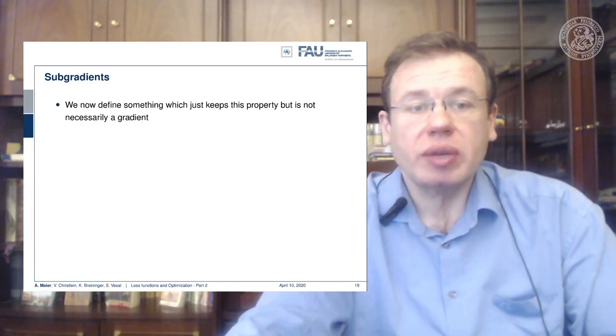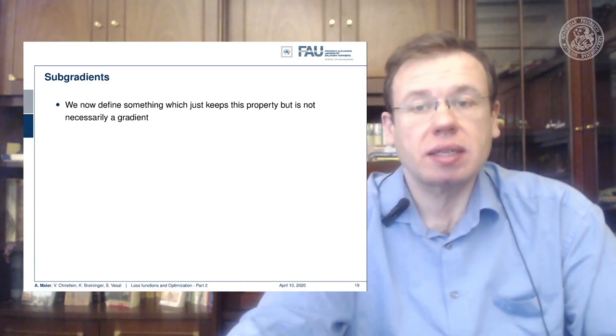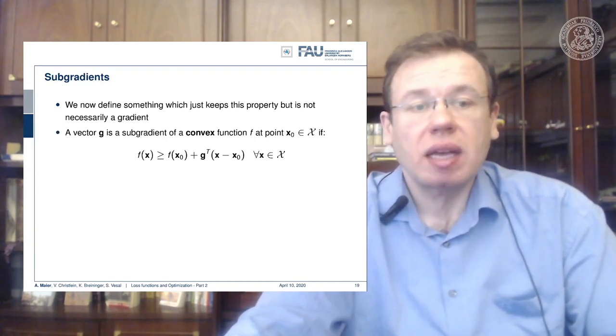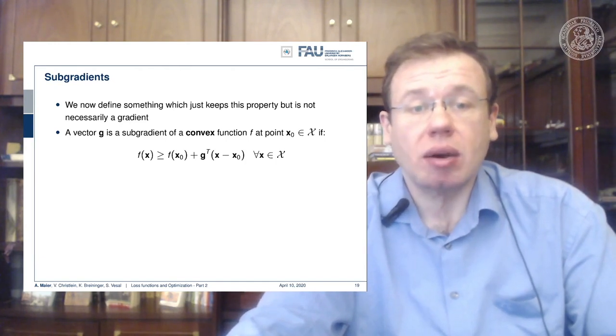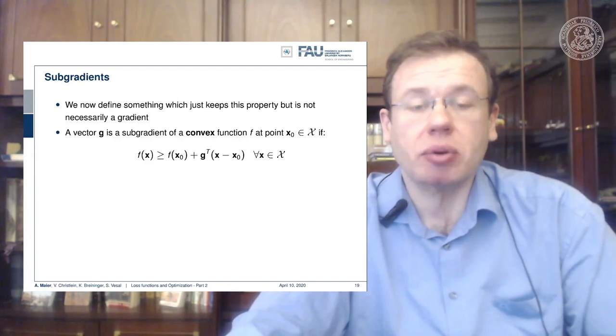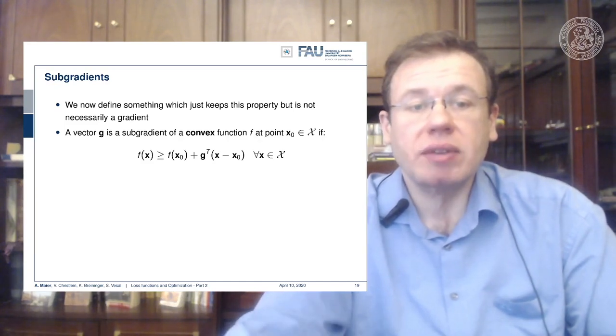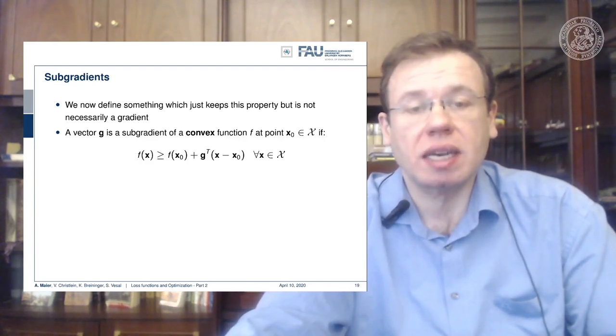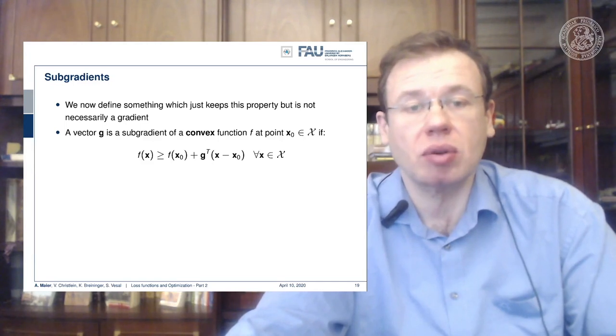In subgradients now, we define something which keeps this property but is not necessarily a gradient. So a vector g is a subgradient of a convex function f at some point x0 if we have the same property. So if we follow the subgradient direction multiplied with the difference between x and x0, then we always have a lower bound.